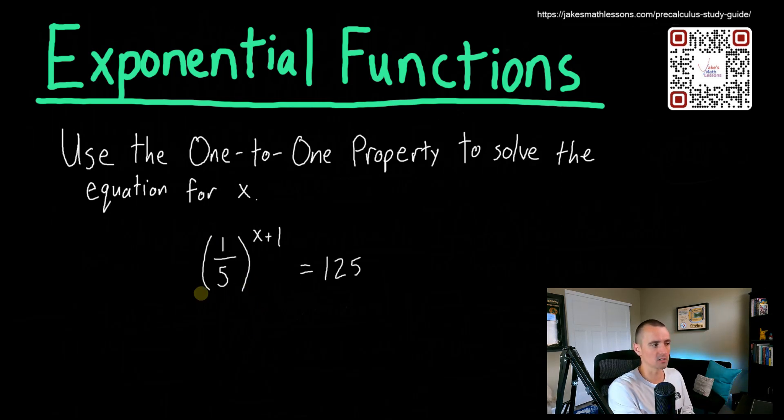In this case, we already have the left side of our equation written in a form that has a base raised up to some power. So now, knowing that we're trying to use the one-to-one property, we really just want to think about how can we now write the right side of our equation as this base raised up to some power?